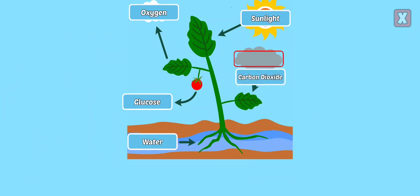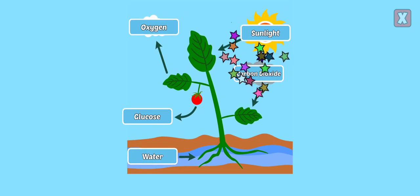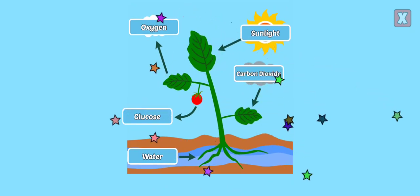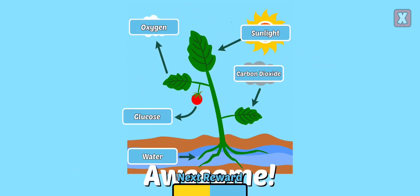Carbon dioxide. Carbon dioxide from the air passes through small holes into the leaves. Awesome!